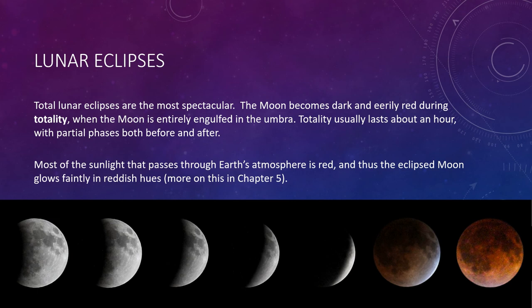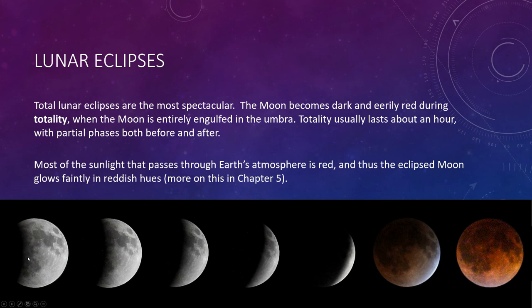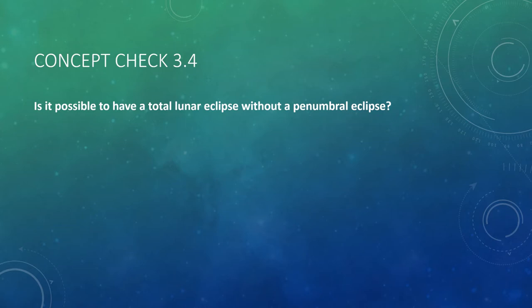Total lunar eclipses are the most spectacular. The moon becomes dark and eerily red during totality — when the moon is entirely engulfed within the umbra. Totality usually lasts for about an hour, with partial phases before and after. Most of the sunlight that passes through Earth's atmosphere is red, and thus the eclipsed moon glows faintly in reddish hues — we'll talk more about why when we get to the scattering of light in our atmosphere. This series of images shows a total lunar eclipse, with the moon slowly moving into the umbra of Earth's shadow, getting darker and darker as it moves further in, and then beginning to glow with a reddish color.